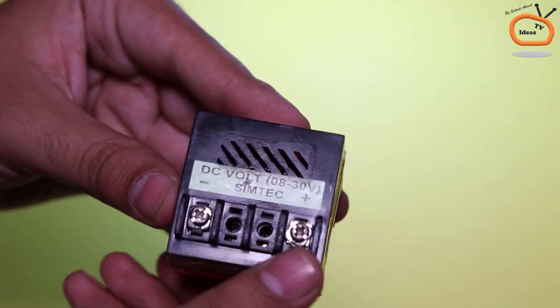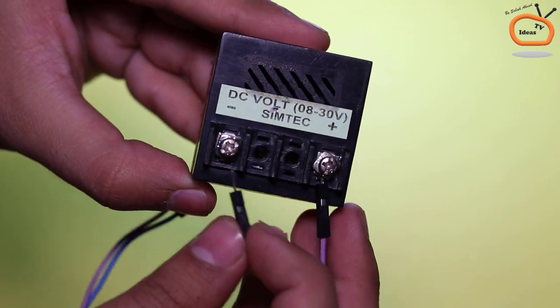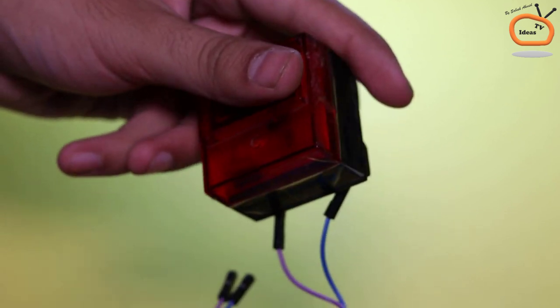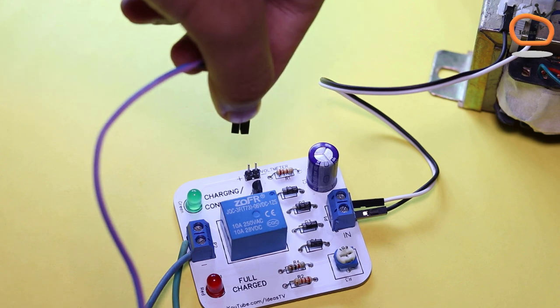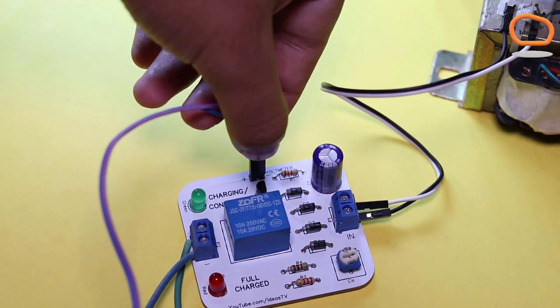Now connect the jumper wires with the digital voltmeter. And connect the jumper wires with digital voltmeter to the circuit board as instructed on PCB.